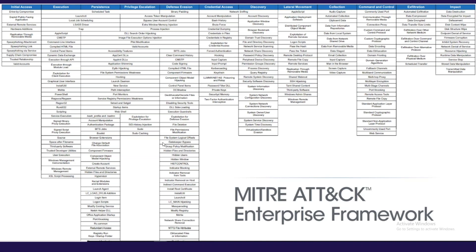My big hurdle was how am I going to display what I can detect out of this? The first thing I decided to do was to use Confluence. I made 11 Confluence pages for each tactic and then slowly started going through each technique and writing my alerts in Sigma. Got about 60 techniques in when I realized this was not scalable and not good at all.